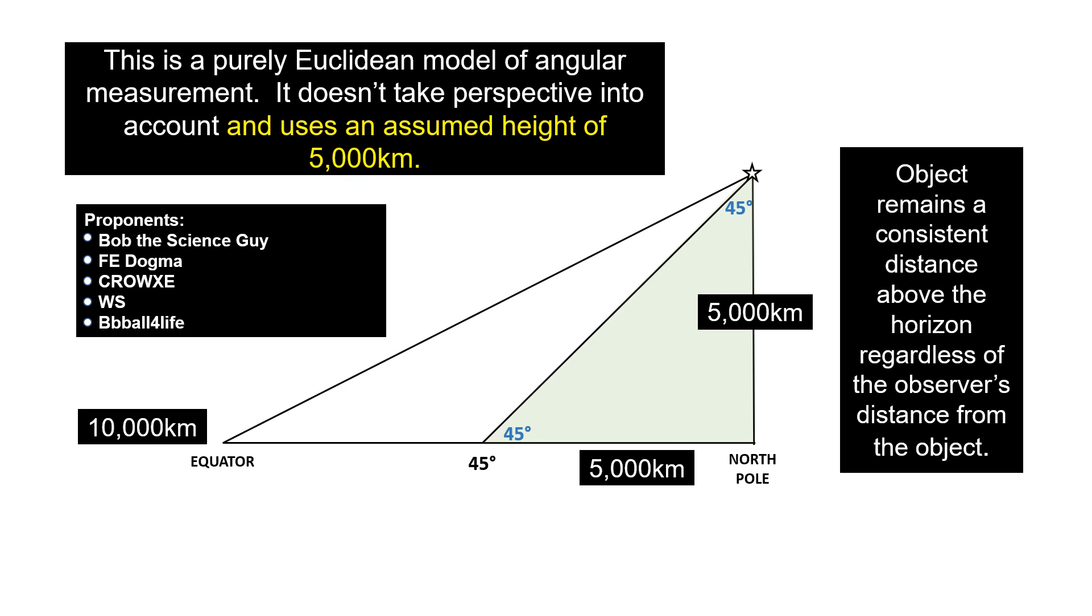'And uses an assumed height of 5000 kilometers.' Well, actually, this is a number that has often been used by flat earthers. As I said earlier, this is an isosceles triangle with two equal sides. All you need to do is know the distance from the North Pole to the 45th latitude. And you can estimate the height of Polaris without even making a calculation.